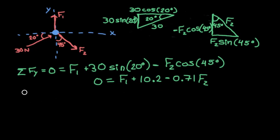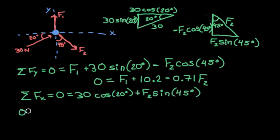So we've got to use our second equation, which is the sum of the forces in the x direction. For the 30 Newton force in the x direction, we have 30 cosine 20 degrees, so we'll put that in. F1 doesn't have any component in the x direction, so we can just ignore that. And then F2 in the x direction we have F2 sine 45 degrees. And that in our calculator we'll get this.